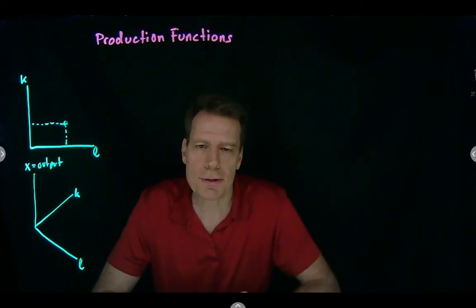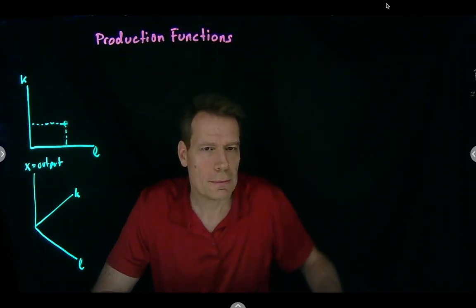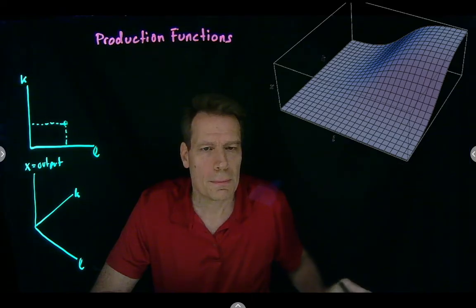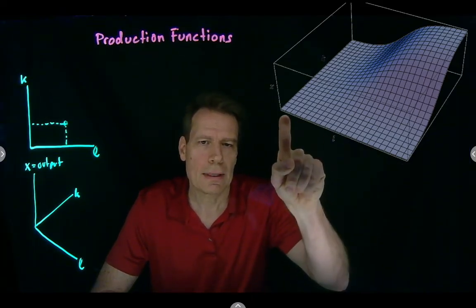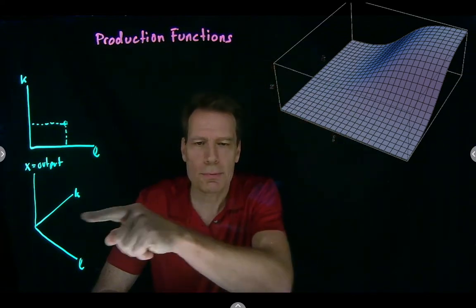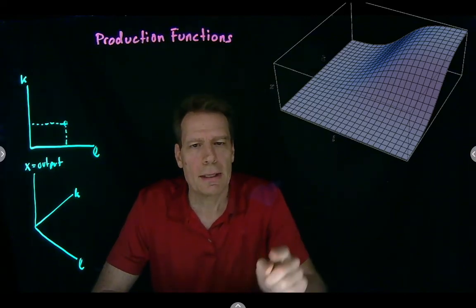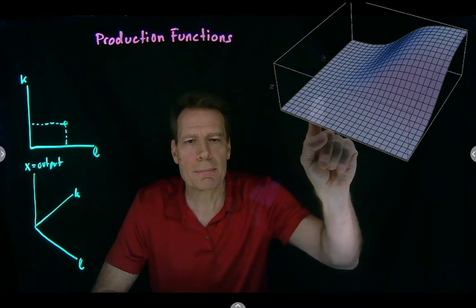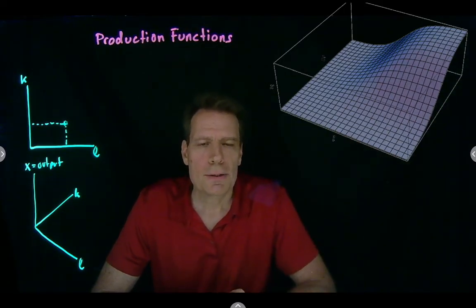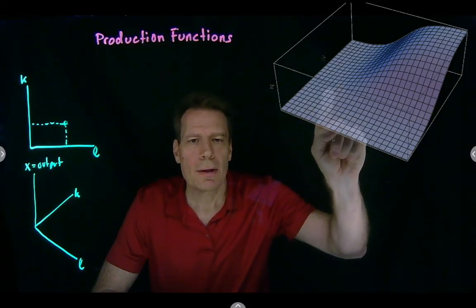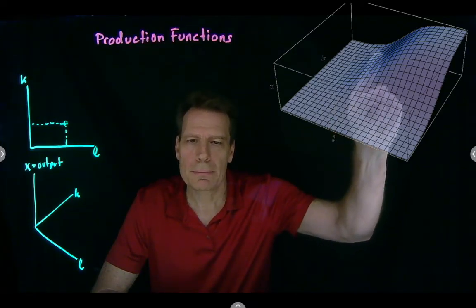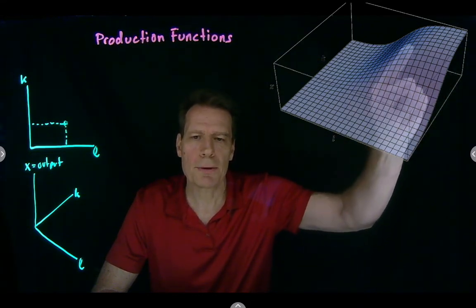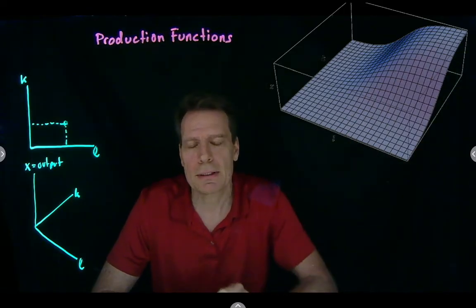What does one of these production functions actually look like? We have one here, where labor is on one axis, capital on another, and output on the third — exactly as described. In this production function, as labor and capital increase, we're moving up a mountain. We initially move up that mountain at a faster and faster rate, but eventually at a slower and slower rate, meaning it initially becomes easier and easier to produce more, but eventually harder and harder.